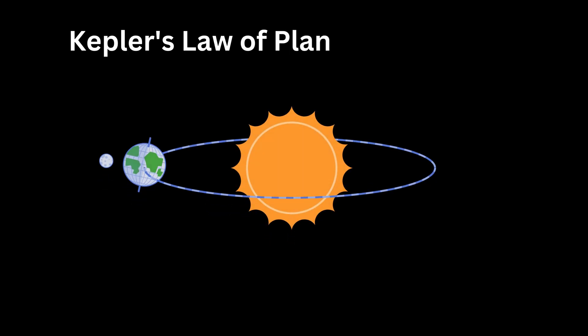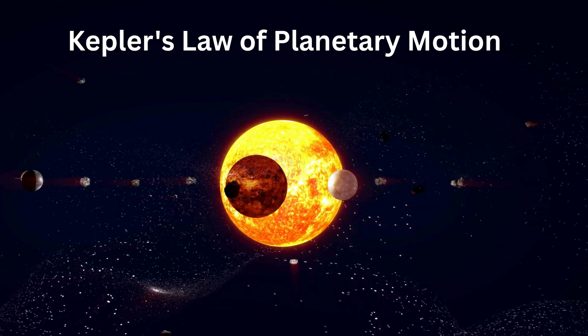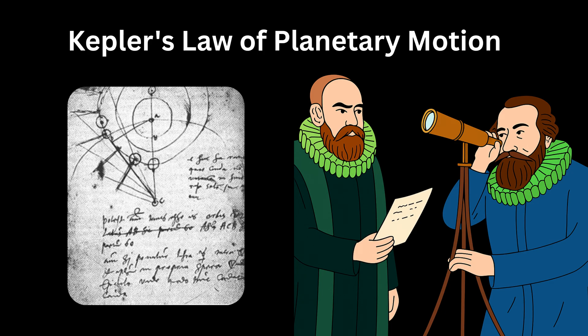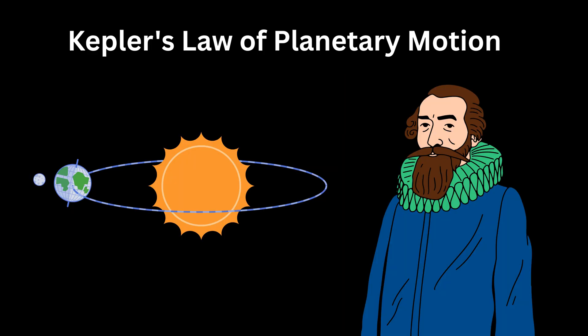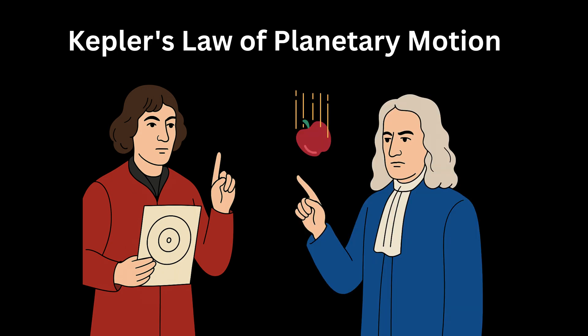Kepler's Laws of Planetary Motion are three governing laws describing the motion of planets in the solar system. These laws were formulated by the German astronomer Johannes Kepler in the early 17th century, working with the precise astronomical data collected by Tycho Brahe. Kepler explained how planets actually move around the sun. These laws not only corrected the old circular orbit model of Copernicus but also laid the foundation for Newton's law of gravitation.